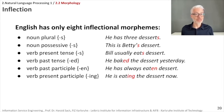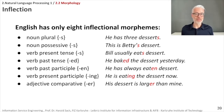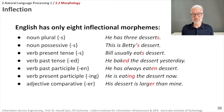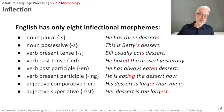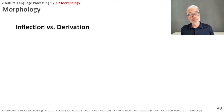There are two more inflectional morphemes for adjectives. The comparative 'er' is added to an adjective: 'his dessert is larger than mine' — 'large' plus 'er' becomes 'larger.' Note that since 'large' ends in 'e,' you don't double it. The superlative 'est' is added to say 'her dessert is the largest.' These are all eight inflectional morphemes in English.